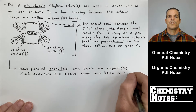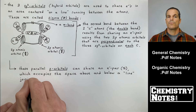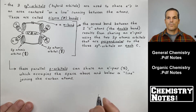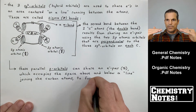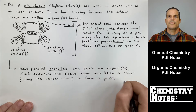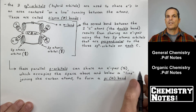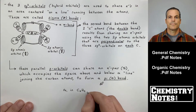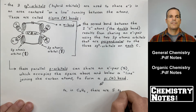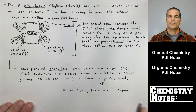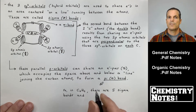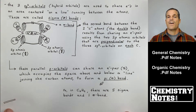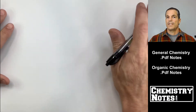A sigma bond is directly on the internuclear line between the two nuclei — that's essentially a single bond. The pi bond is usually the second bond in a double bond; if you have two pi bonds you have a triple bond. These parallel p orbitals share an electron pair occupying space above and below the line joining the carbons, forming a pi bond. In C2H4 there are five sigma bonds and one pi bond.